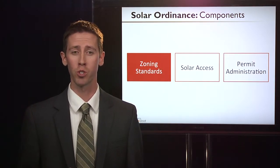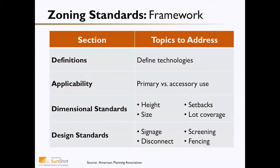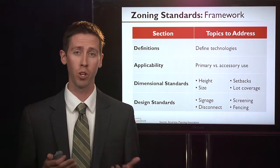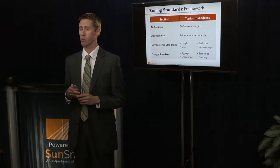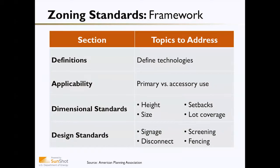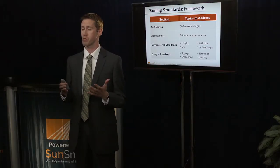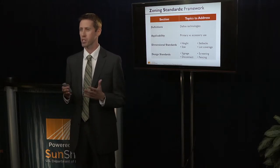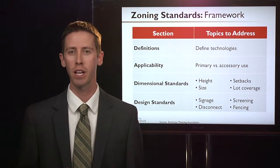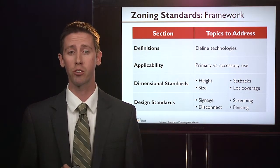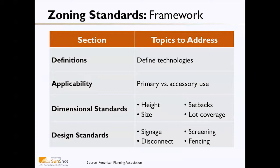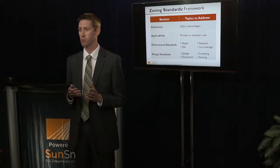First, we'll talk about solar zoning standards. There's a particular framework that may be useful. First is the definition — what type of technology are you focusing on? Here we're mostly talking about solar photovoltaics, either rooftop or ground-mounted systems. Then the applicability — are they a primary use or an accessory use of the property? Dimensional standards should address height restrictions, size restrictions, setbacks from the roof line and property boundaries, and how much of a lot could be covered by solar. Finally, design standards may include required signage, disconnect switches for utility worker safety, and screening or fencing to mitigate visual impacts.